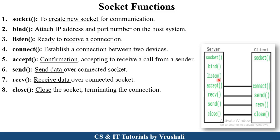The connect function is used to establish the connection between two devices. Next is the accept function — the server accepts the connection with the client and accepts all the data that the client wants to send. The send function works to send data over a connected socket to the accurate receiver, and the receive function is used to receive data over a connected socket from the accurate sender. Finally, the close function is used to close the socket, close the communication, and terminate the connection. These functions are used in socket programming to provide accurate communication between client and server.